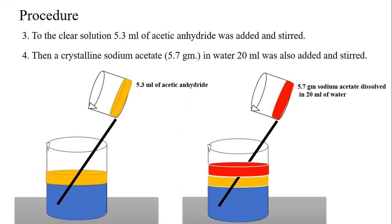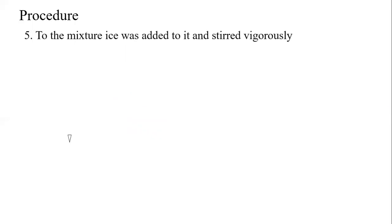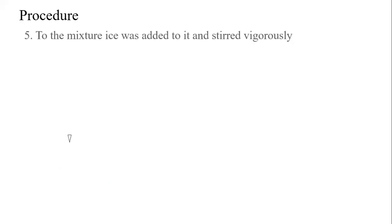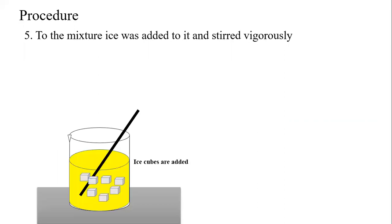That is the mixture of aniline, HCl, and acetic anhydride. To the same beaker we will be adding 5.7 g of sodium acetate dissolved in 20 ml of water and will keep on stirring. To the mixture, after the stirring, we will add ice cubes to it and continue the stirring.